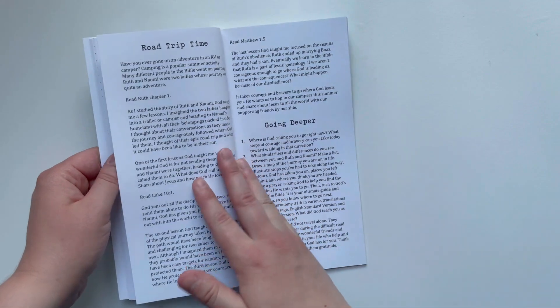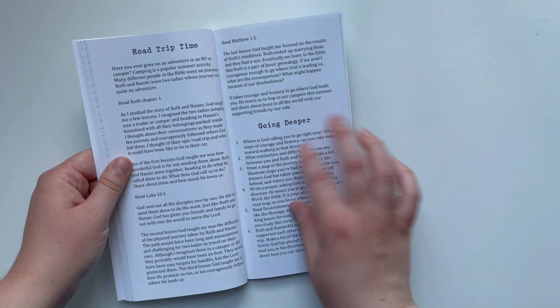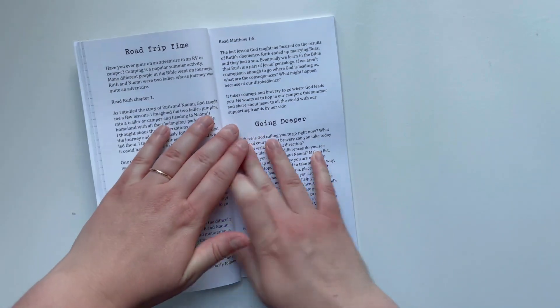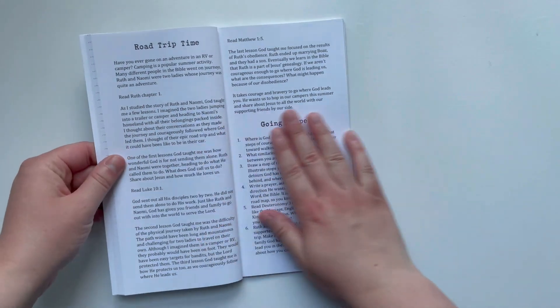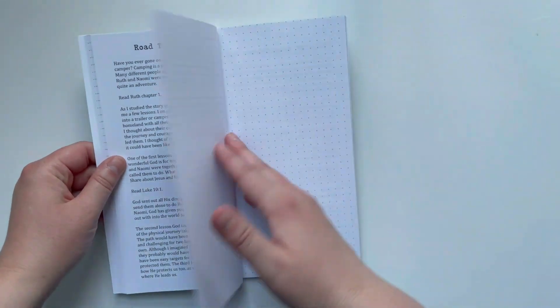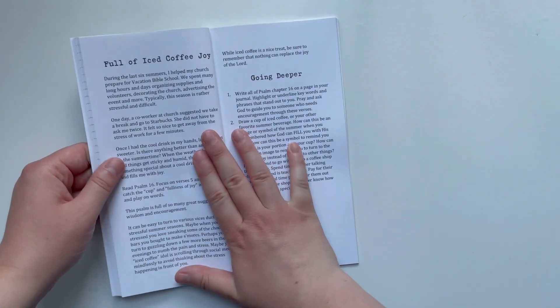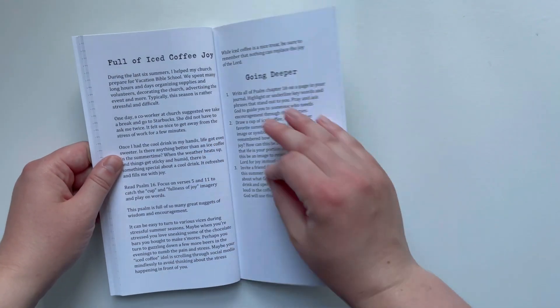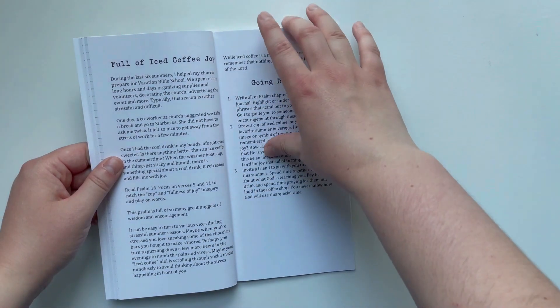Road Trip Time—this is actually based off of a printable in my Etsy shop, and I will link that printable down below. It has some cute camper imagery in it and it focuses on the book of Ruth. Full of Iced Coffee Joy—think about what is the thing that you turn to when you are trying to numb or get through a hard season.